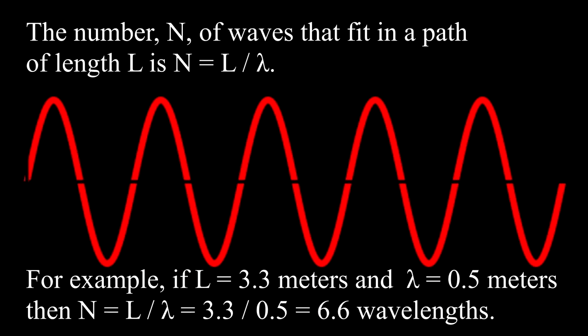The number n of waves that fit in a path of length l is n equal l over lambda. For example, if l equal 3.3 meters and lambda equal 1.5 meters, then n equal 3.3 over 1.5 equals 6.6 wavelengths.